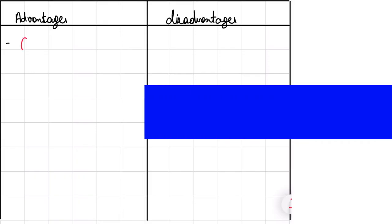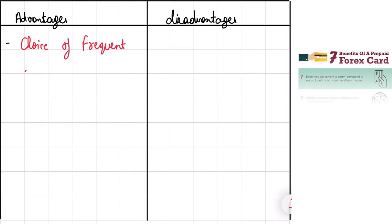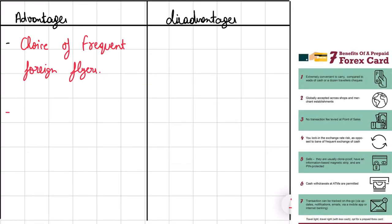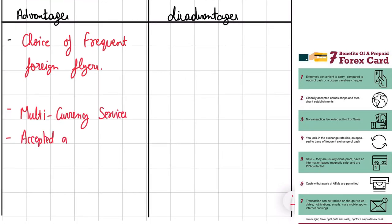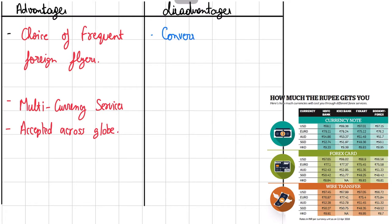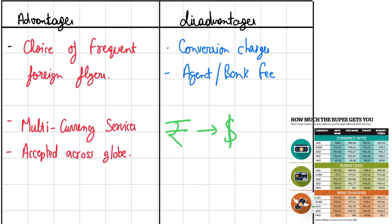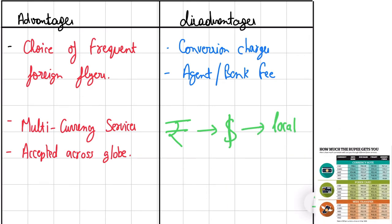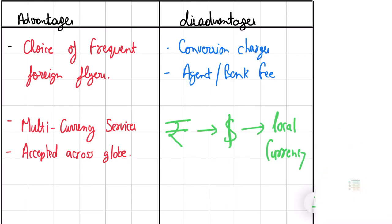Another choice is a forex card. These are preferred by frequent foreign travelers and can handle multi-currency transactions at ATMs and point-of-sale terminals, making them a better choice if you travel to different countries. The disadvantages are that sometimes agents charge a fee to load your card with US dollars, plus conversion fees from INR to USD and then USD to the local currency. Conversion charges may also vary based on the bank and fluctuations in the US dollar.